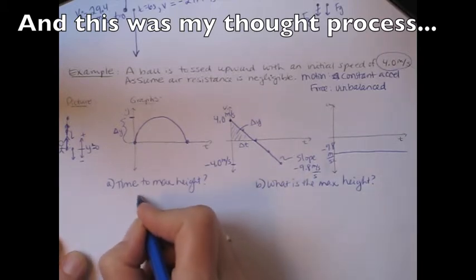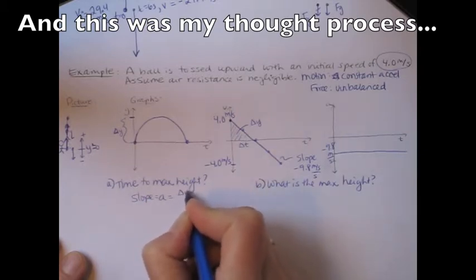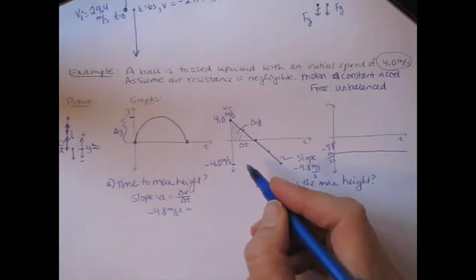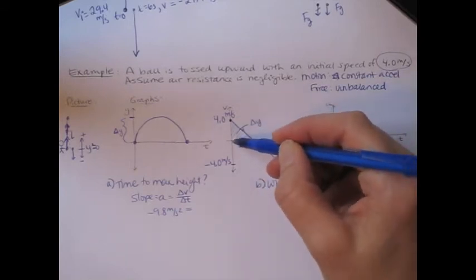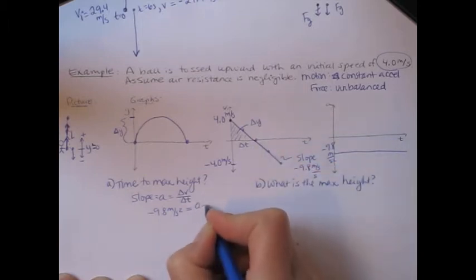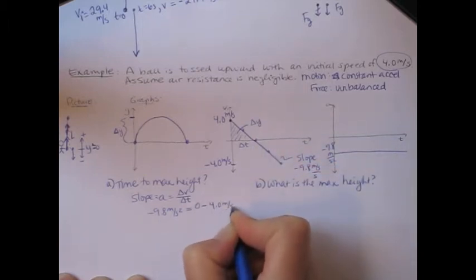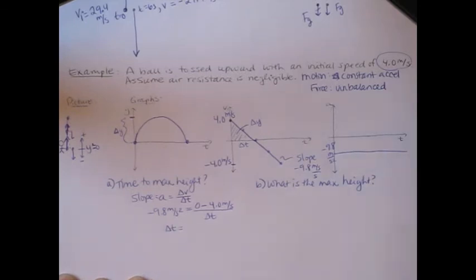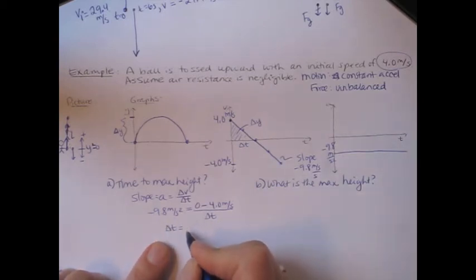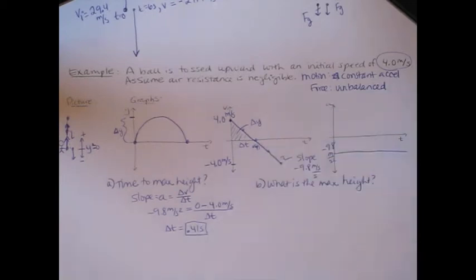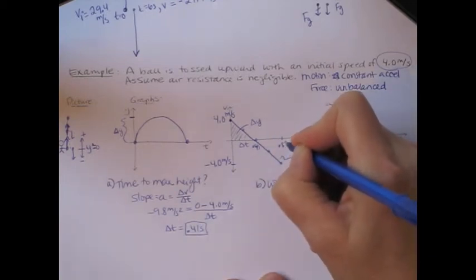Slope equals acceleration, which is the change in velocity over the change in time. The acceleration is negative 9.8 meters per second squared. The change in velocity is negative 4, because it went from 4 to 0 — that's v final minus v initial, where final velocity is 0. Multiplying both sides by delta t and dividing by negative 9.8, we get 0.41 seconds. That's the time to reach maximum height. By symmetry, the total time for the whole motion must be 0.82 seconds.